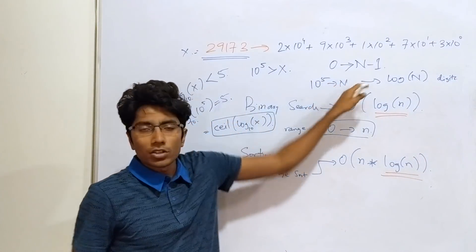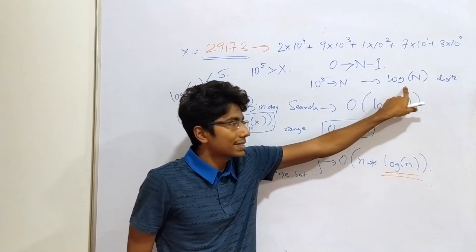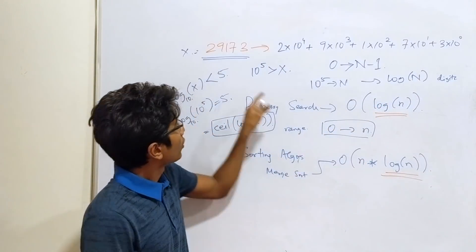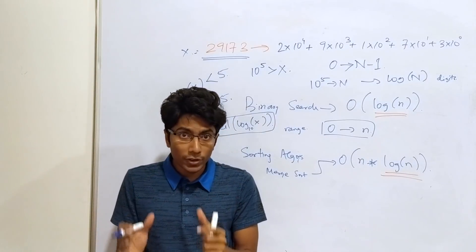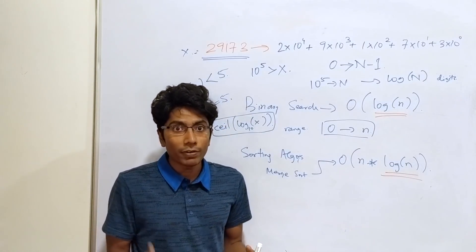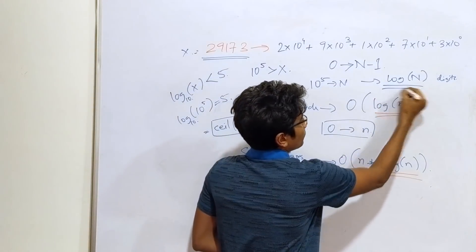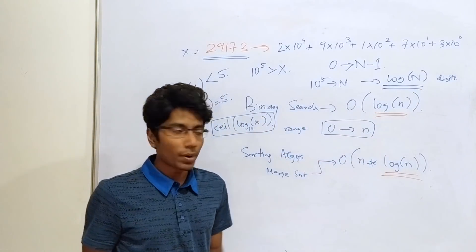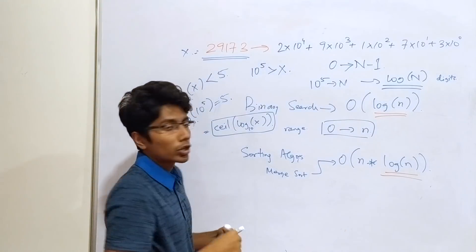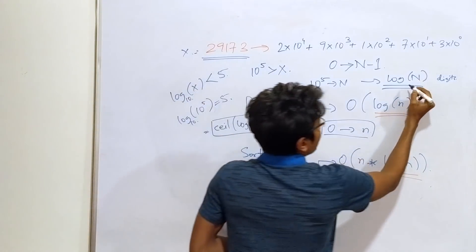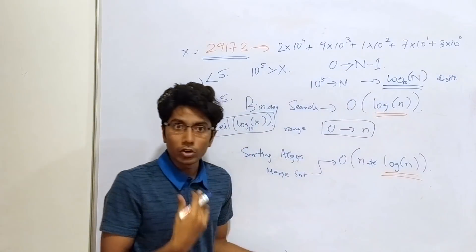Right? So from 0 to n minus 1, if I need to uniquely identify a number x, I need log n bits, log n digits basically. Right? In fact, from 0 to x also, of course, it's less than log n digits maybe. But from a range 0 to n minus 1, number of digits you need to uniquely identify a number x is log n. Right? That part is clear because we just proved it taking the largest exponent.